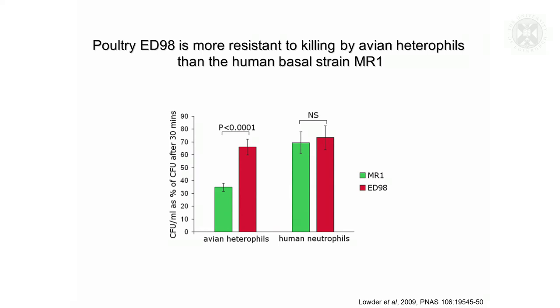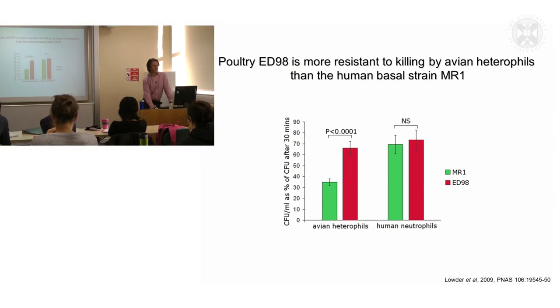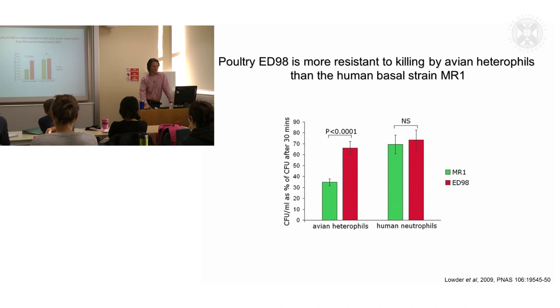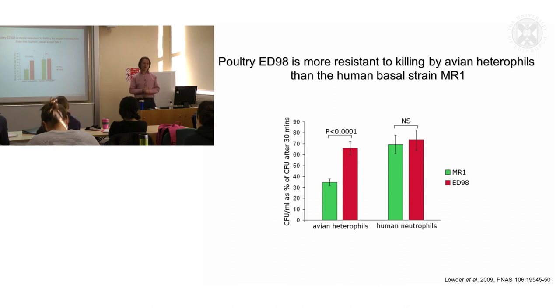To show that what we see at the sequence level is also reflected at the phenotypic functional level: we find that the poultry strains are more resistant to killing by avian heterophils — the chicken equivalent of neutrophils — than the human strain MR1, which is the closest relative circulating in Polish hospitals. So the strain seems to have adapted an enhanced ability to survive in the presence of avian heterophils.